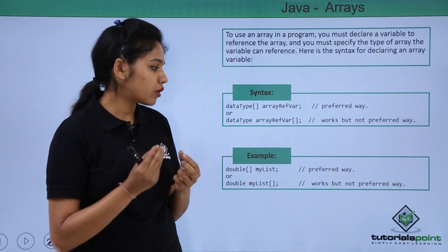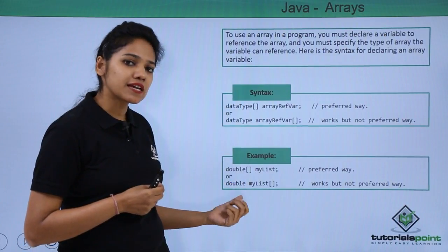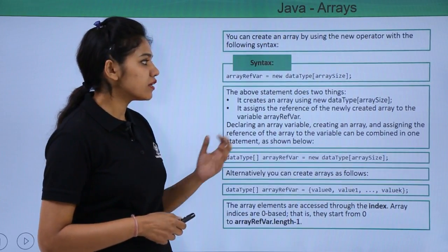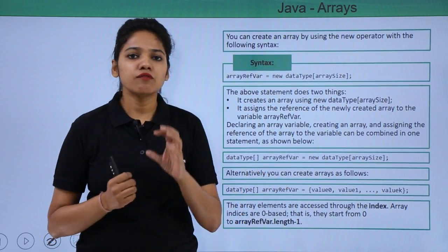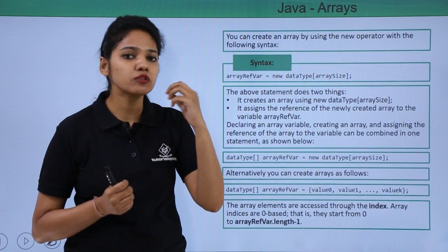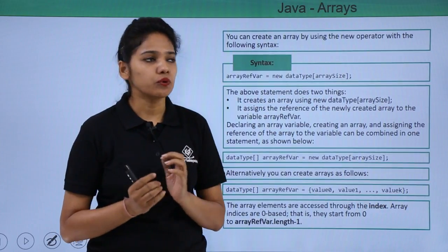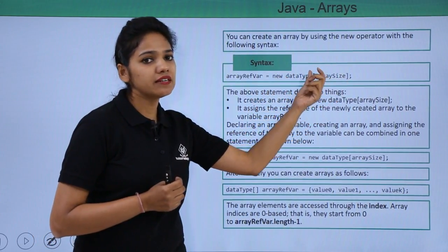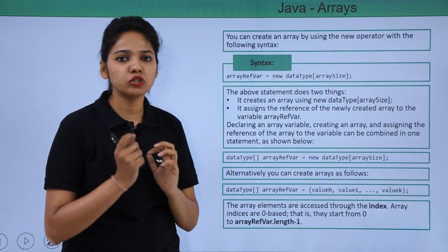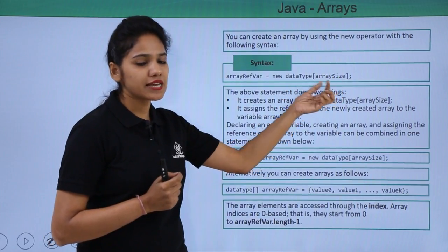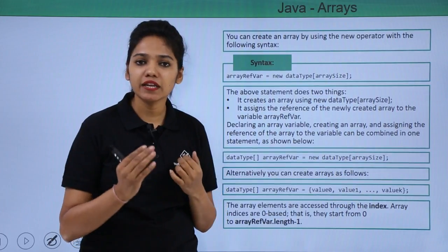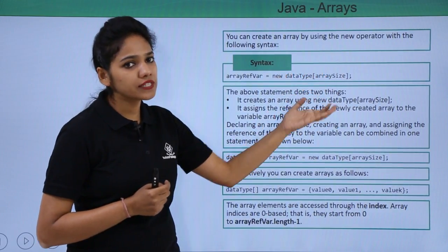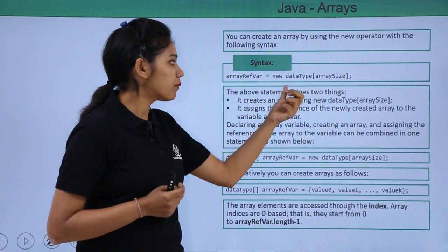The bracket says that we will hold a number of values. For example, the data type is double, it will hold the values, and the array name is myList. Next, you create an array and then store values in it — you need to initialize it. You write: variable equals to new data type and the array size. The new keyword will help you to create a new array of this particular type and size. The reference of this array will be stored in this variable with the help of the new keyword.